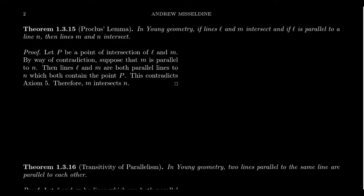That proves the first theorem of Young's geometry. The next two theorems get names because they are actually theorems of the broader family called affine geometry, which we'll study in Lecture 7. The first named theorem is Proclus's Lemma. It states: if lines L and M intersect, and if L is parallel to N, then M and N must intersect each other — that is, if L and M are not parallel and L is parallel to N, then M is not parallel to N.